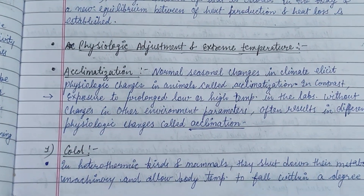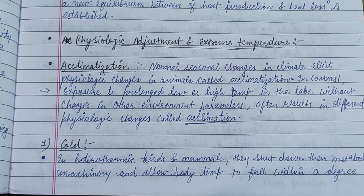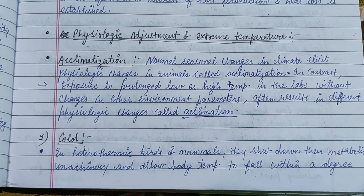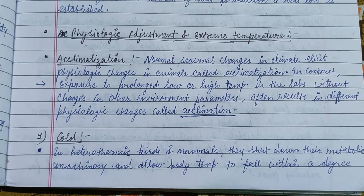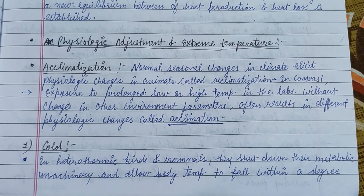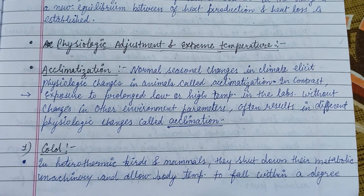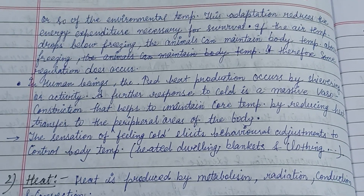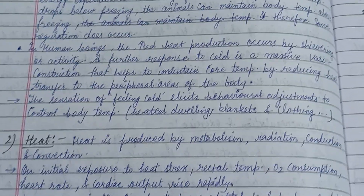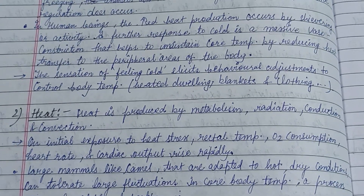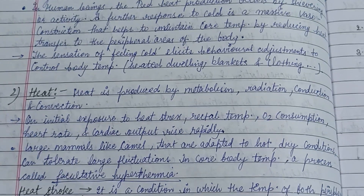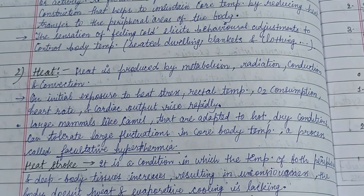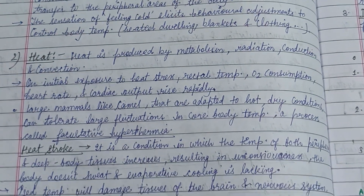Physiological adjustment to extreme temperature — acclimatization — involves seasonal changes in the climate and physiologic changes in animals. In cold, heterothermic mammals shut down their metabolic machinery and allow body temperature to fall within a degree of the environmental temperature. In human beings, increased heat production occurs by shivering or activity. A further response to cold is massive vasoconstriction, which helps maintain core temperature by reducing heat transferred to peripheral areas of the body.